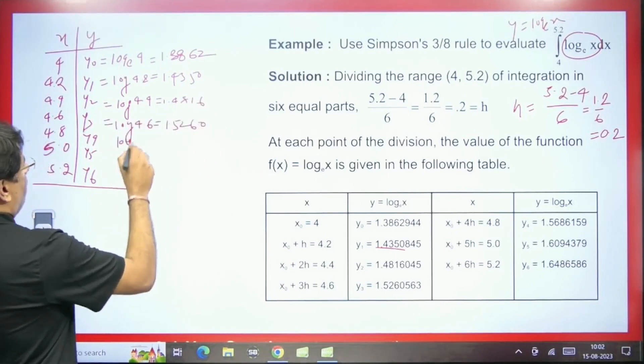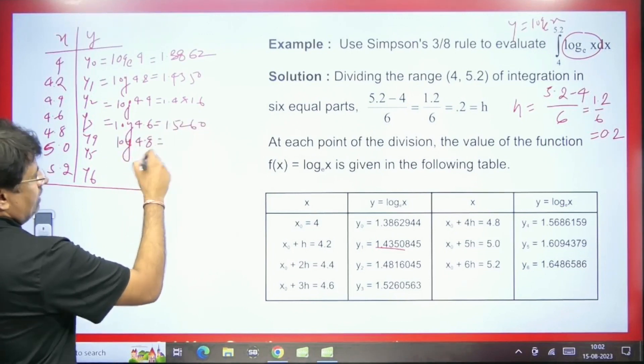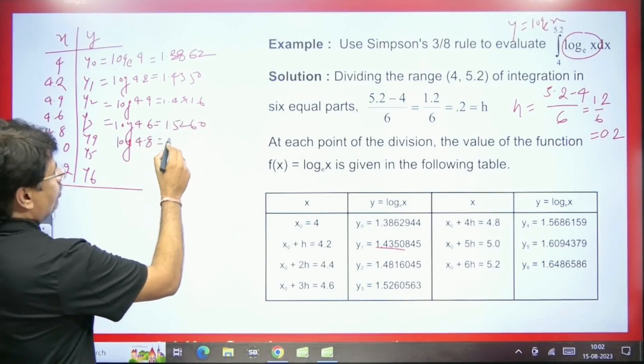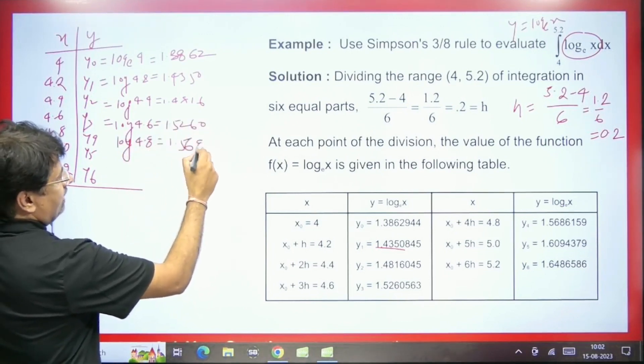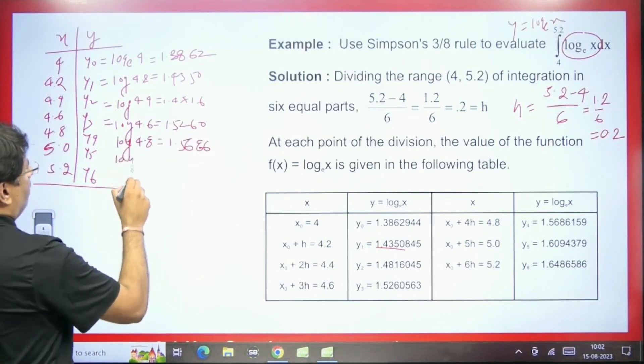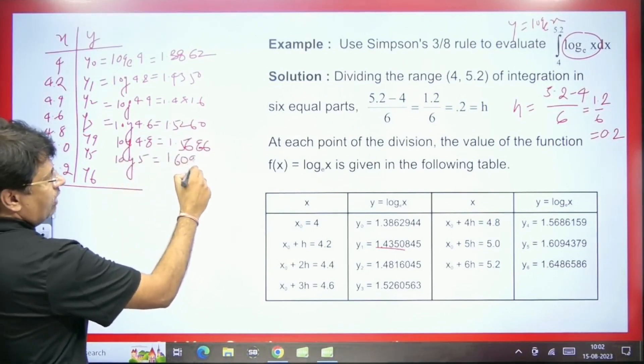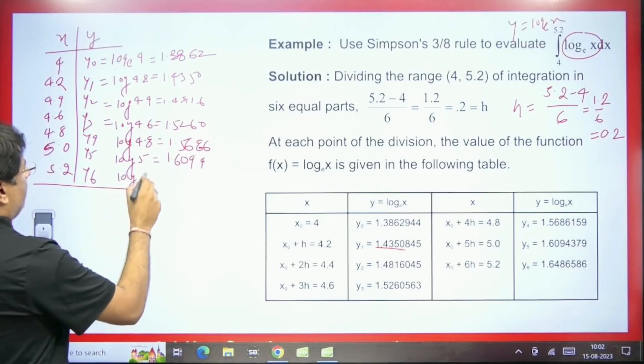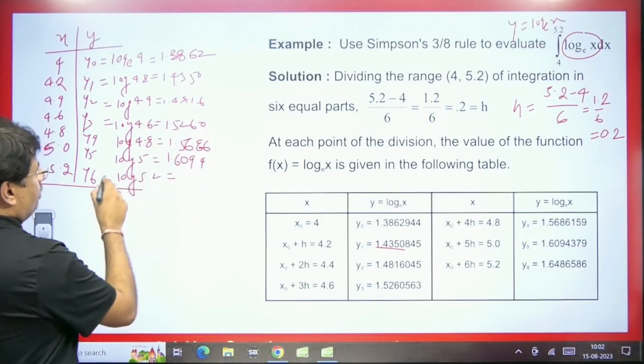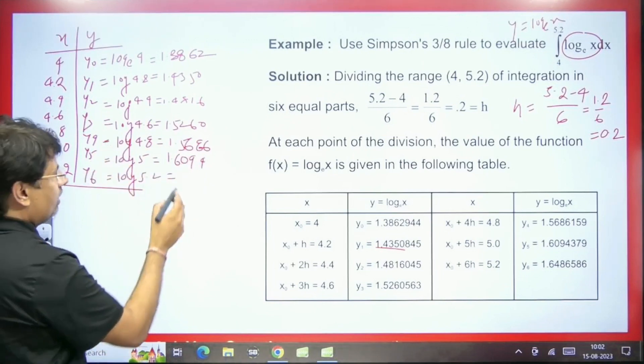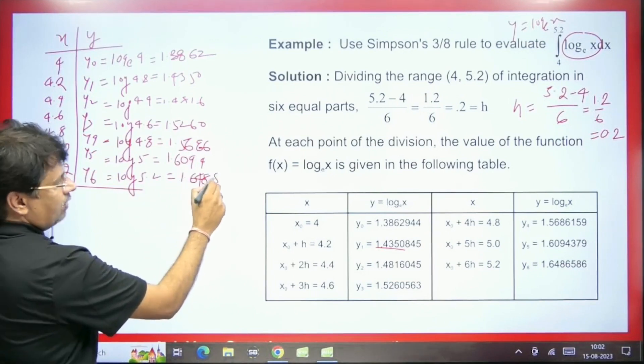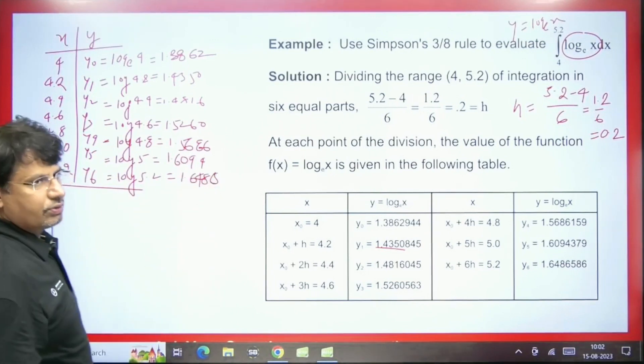Here also, this will be log 4.8. The value that will come will be 1.5686 and similarly we will write log 5. So this value we will get will be 1.6094. Here we will write log 5.2 is equal to. So from here, the value that we will get will be 1.6486. So this is how we do it.